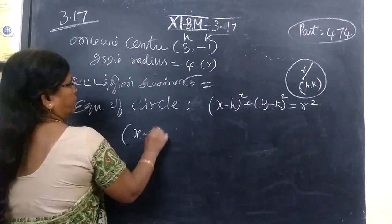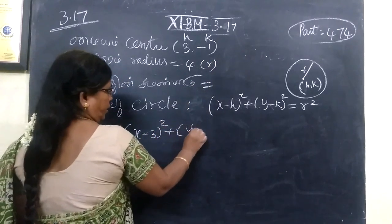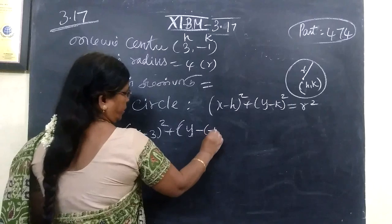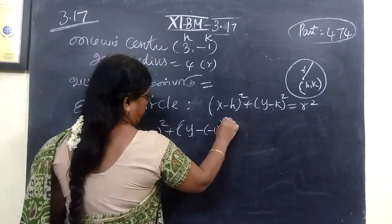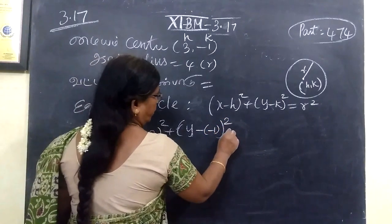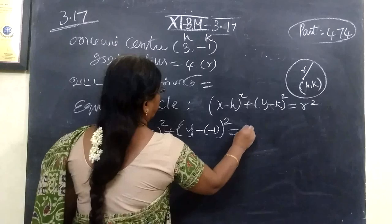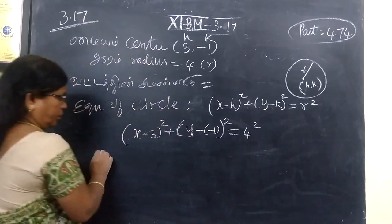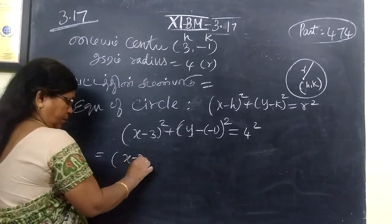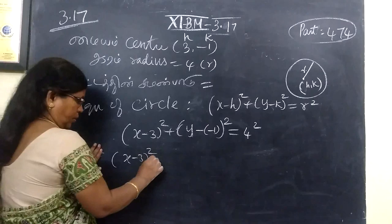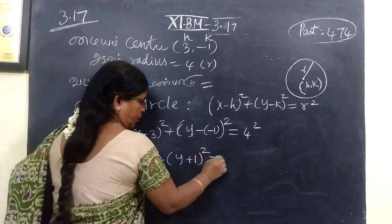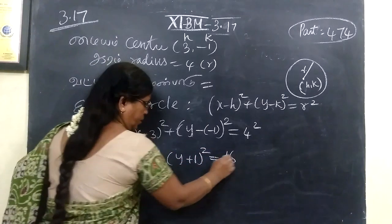So, x minus 3 whole square plus y — why is this minus here? This is minus here. So, (y plus 1) whole square equal to r square equal to 4 square. This gives x minus 3 whole square plus y plus 1 whole square equal to 16.